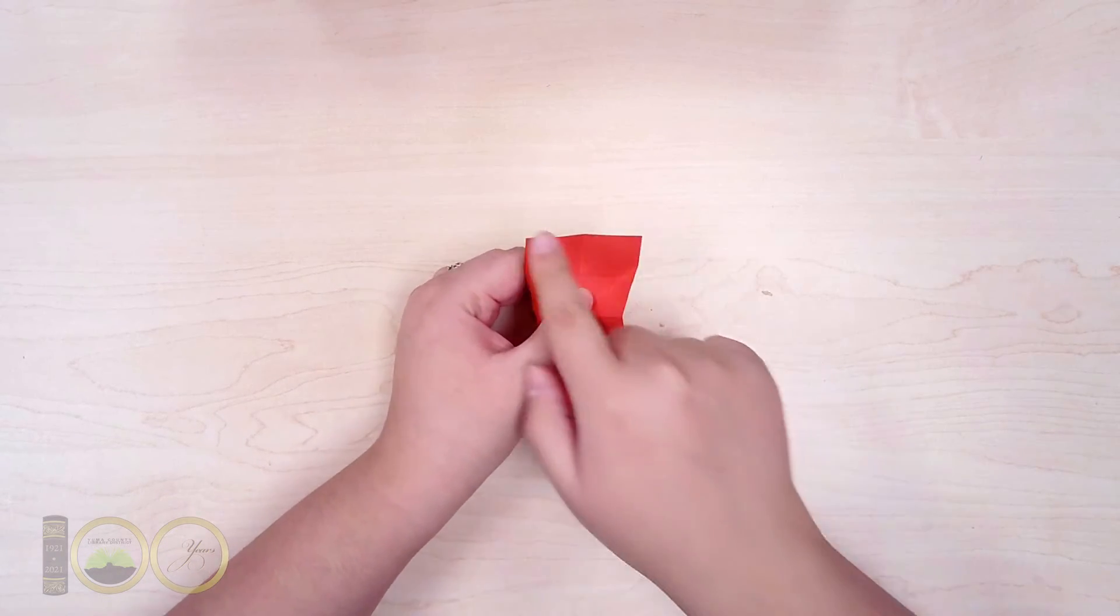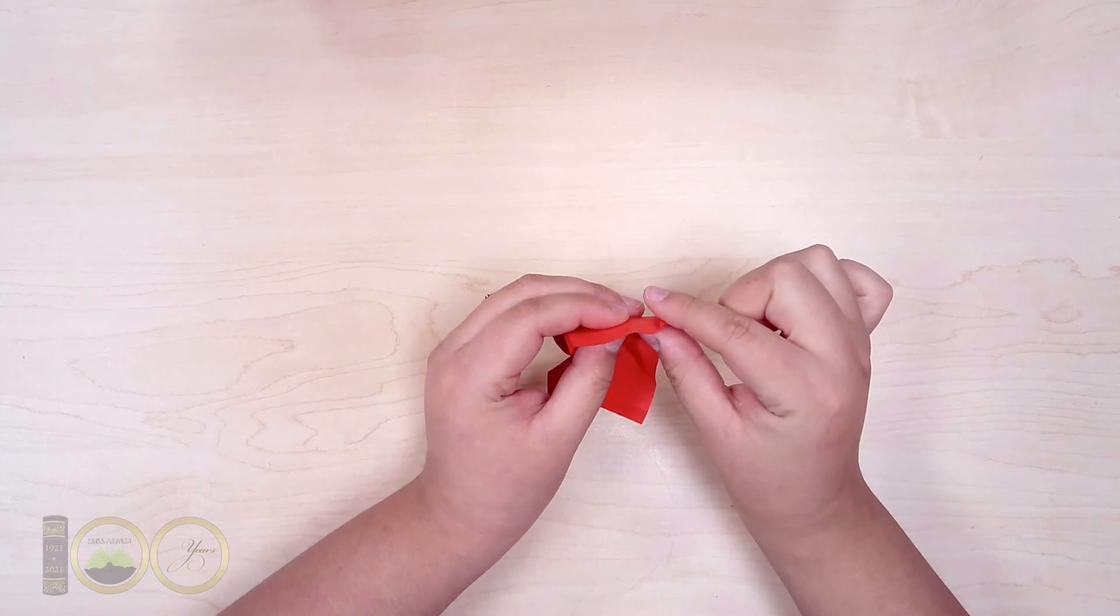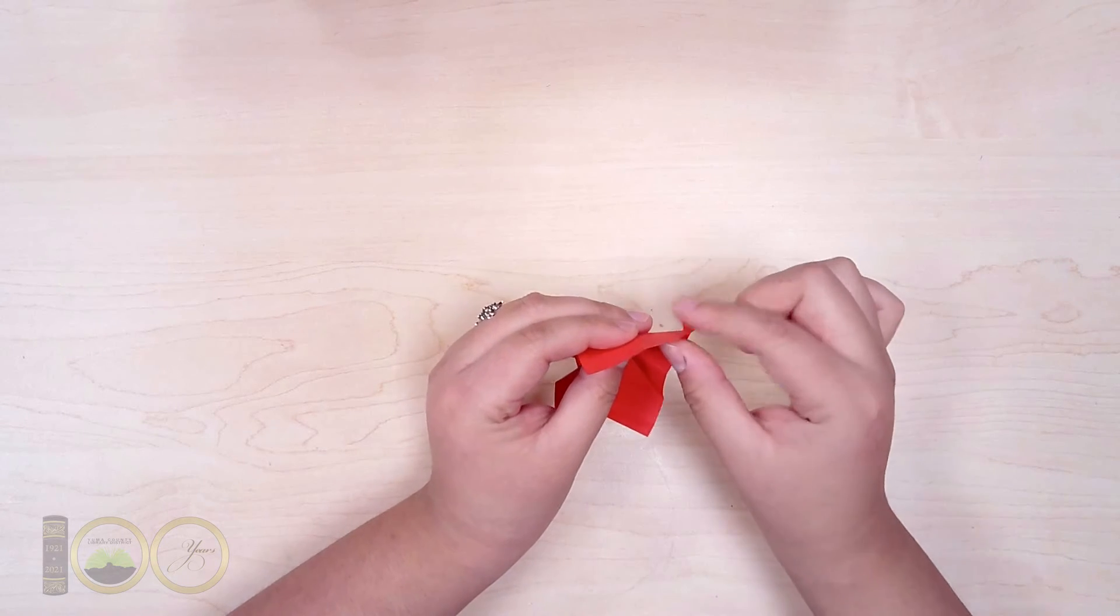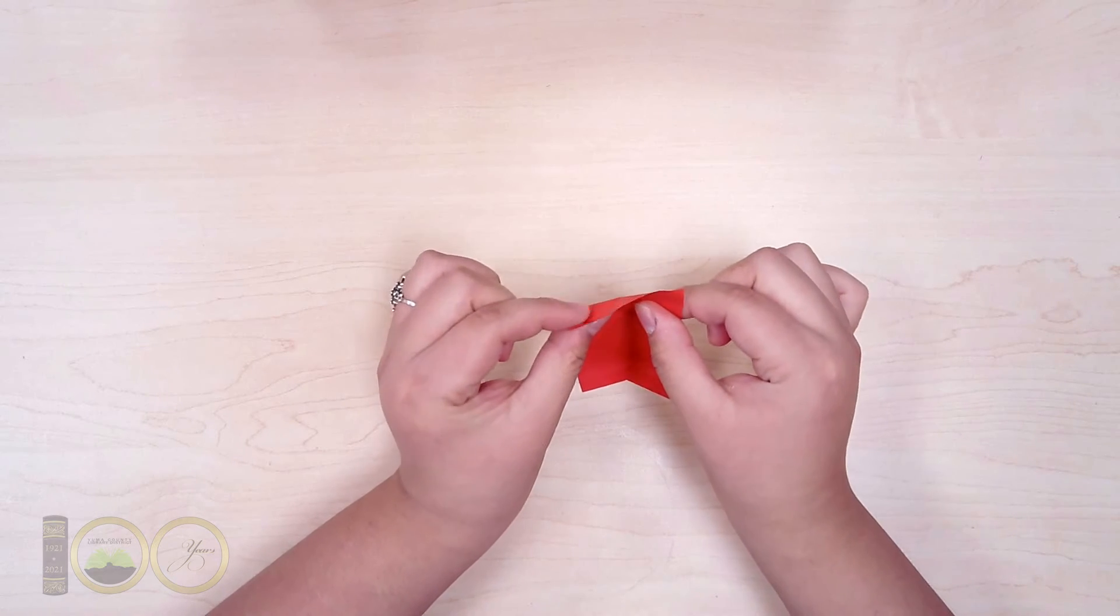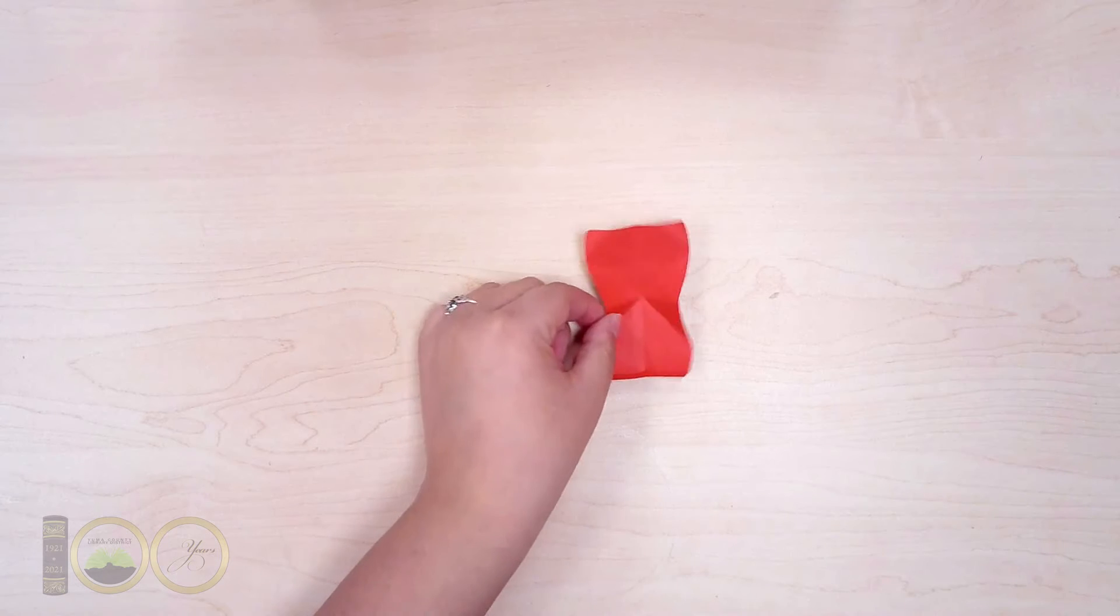Then curl the top right and left corners of the paper up and outwards. The easiest way I've found to do this is by slightly folding the corner back with your index finger and thumb underneath. Then, using a bit of pressure, roll the paper back by moving your index finger towards you. Set this aside for now.